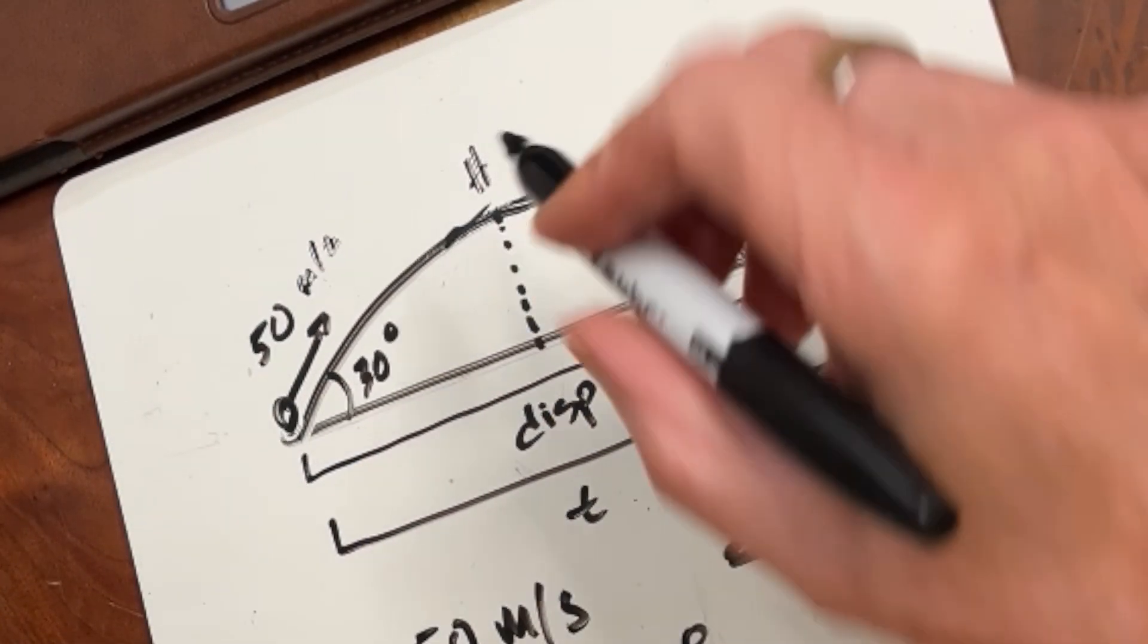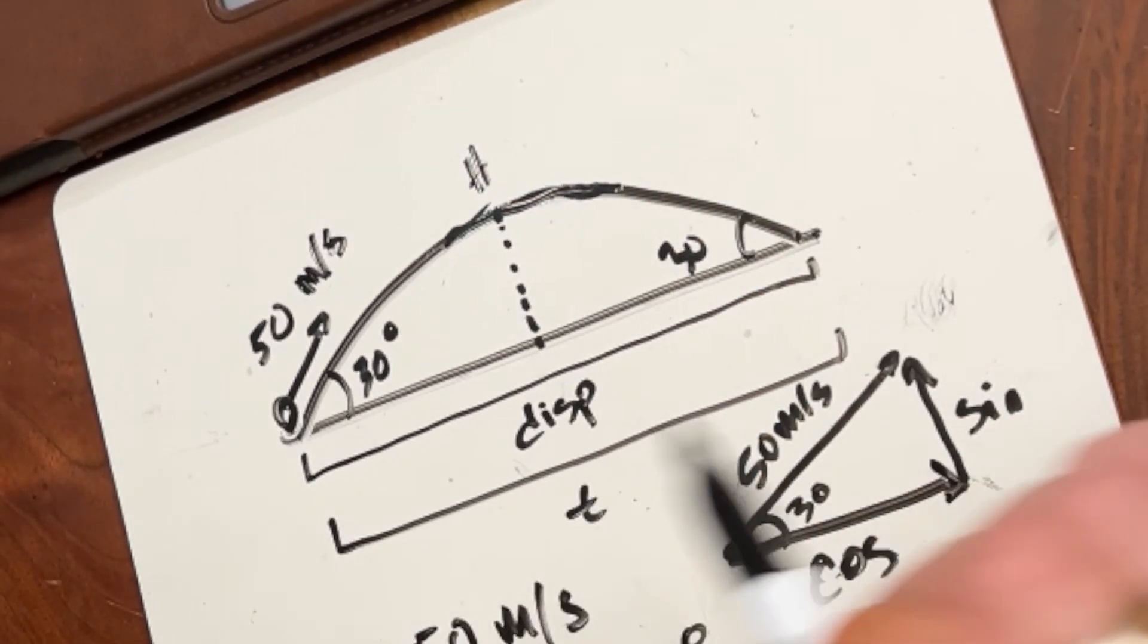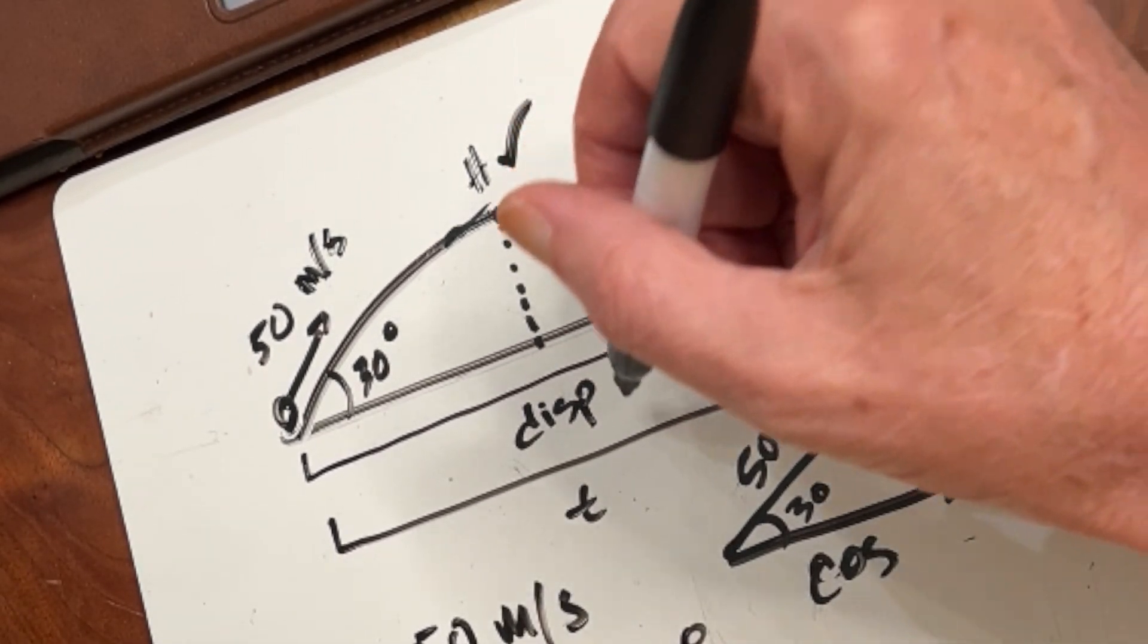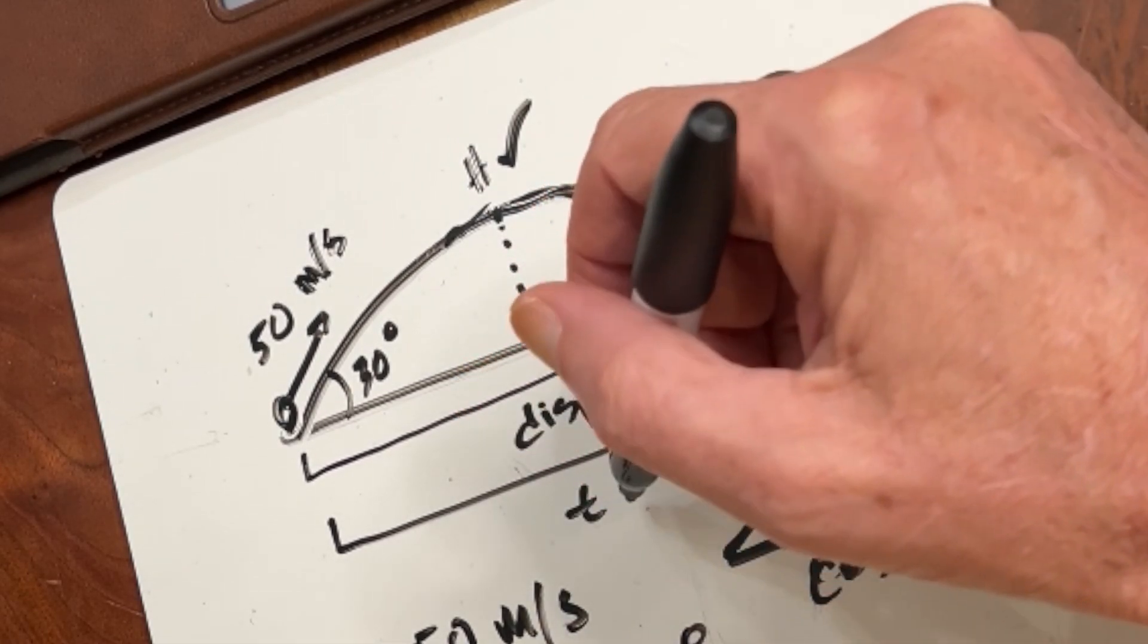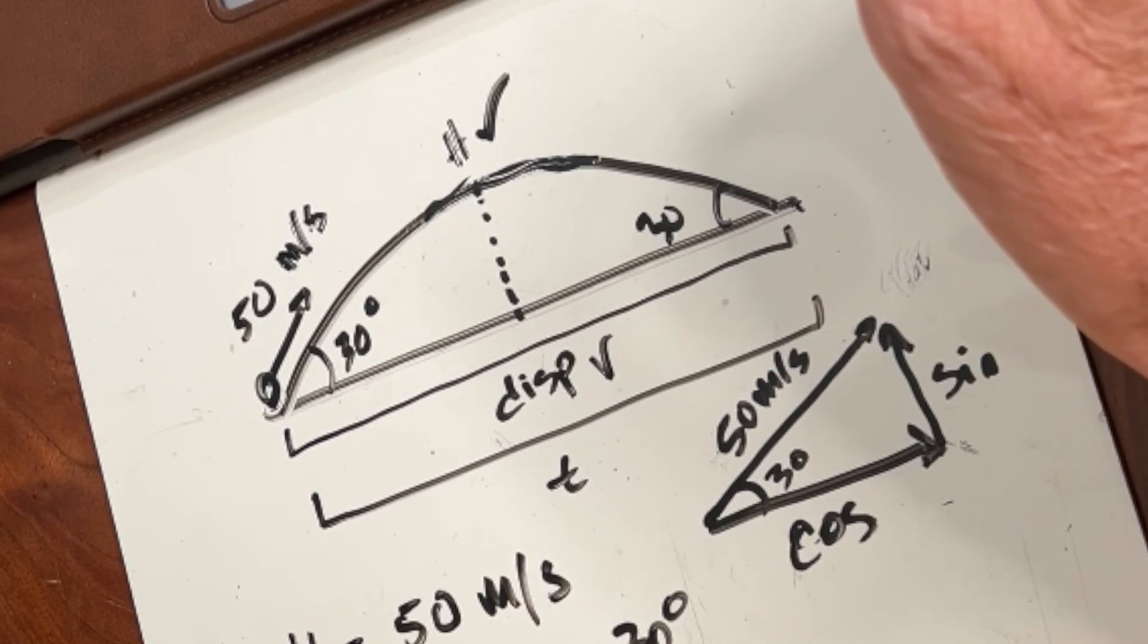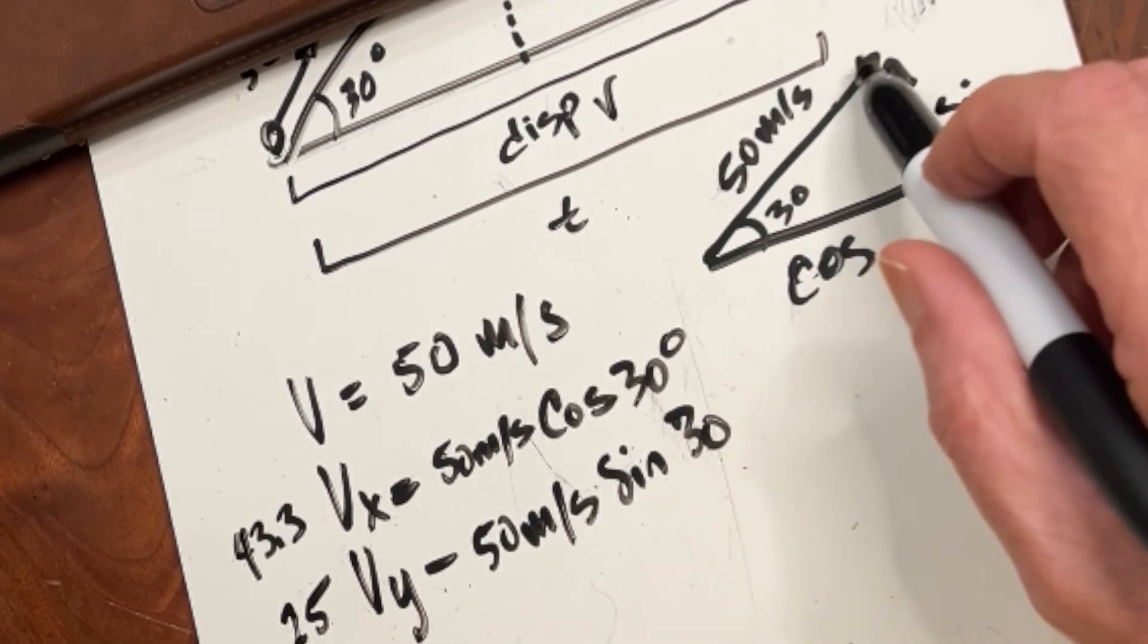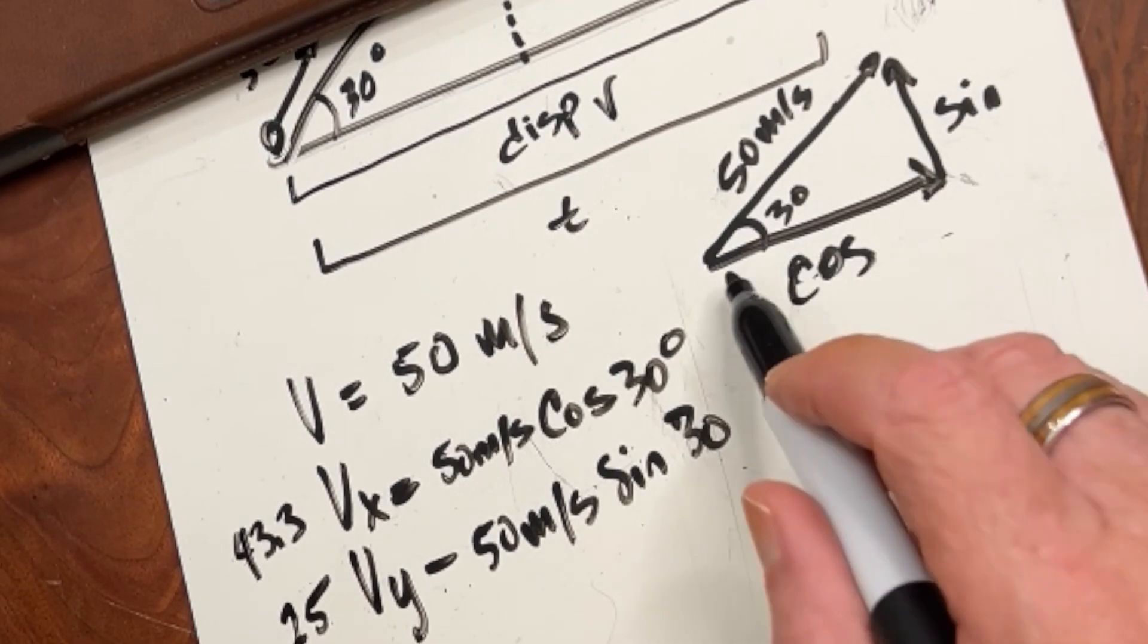Now here we have an example of a ball being shot up at 50 meters per second at a 30 degree angle above a surface. Now questions that we'll be asked to answer is, well how high does it get? What is the displacement of the ball from beginning to end? And how long would it take for the ball to hit the ground again? Now the difference between the other problems that we've done so far is that this involves motion in two distinct directions.